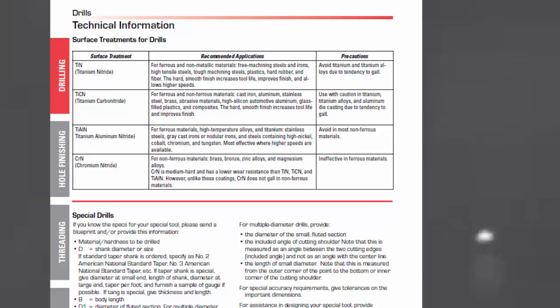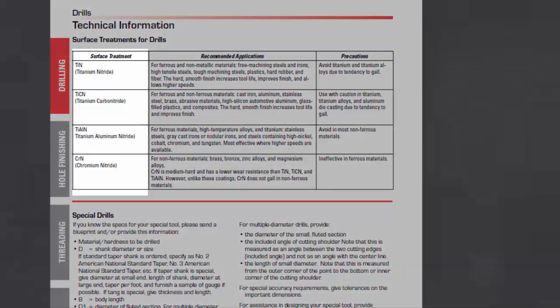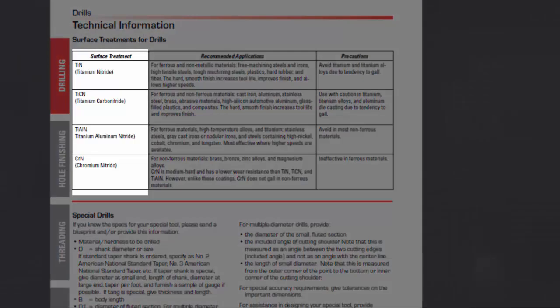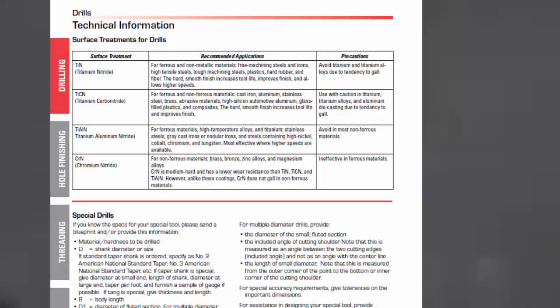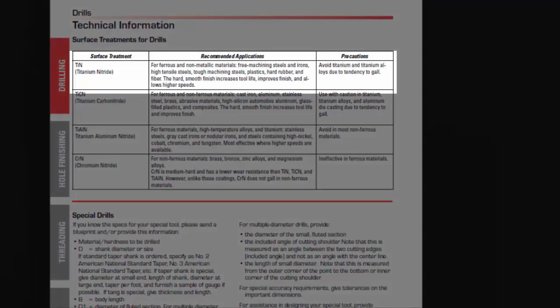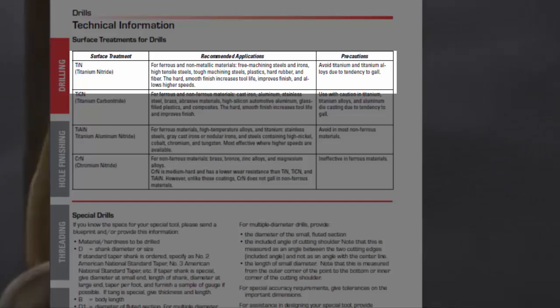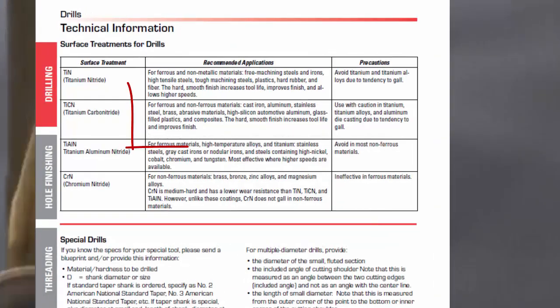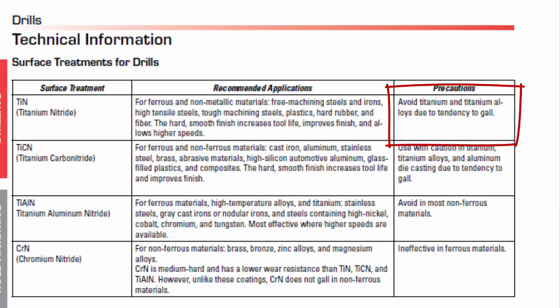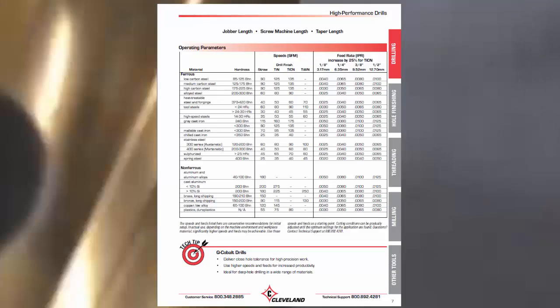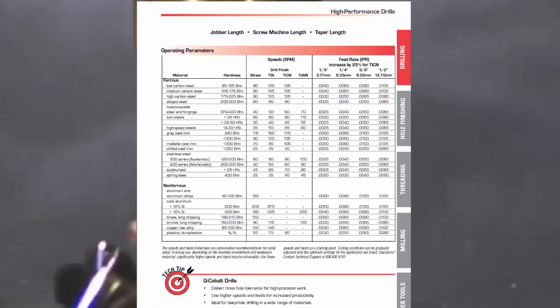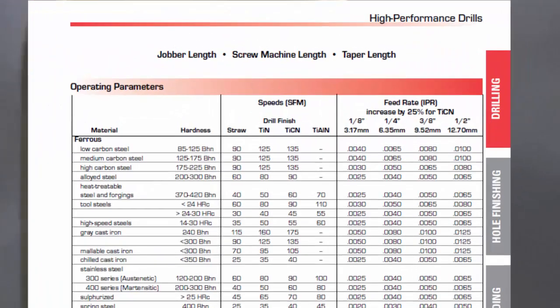This next page describes some of the applications of different surface coatings. Coatings can reduce friction and increase cutting speeds and feeds. For instance, look at drills treated with titanium nitride — the recommended application would be both ferrous and non-metallic materials, but notice it's not recommended for titanium and titanium alloys. This last page shows how these different coatings impact cutting speeds and feeds.